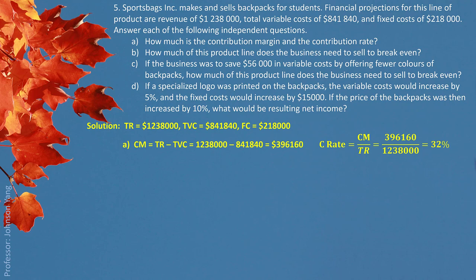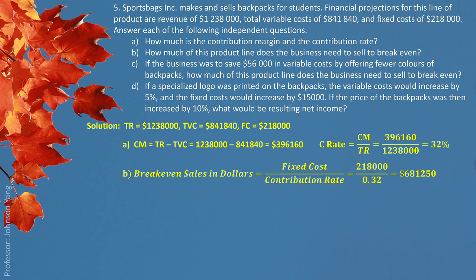Part B asks how much of this product line the business needs to sell to break even. We are looking for the break-even sales in dollars. Since we already have the contribution rate, we apply the formula directly — fixed cost divided by contribution rate — giving break-even sales of $681,250.